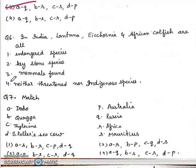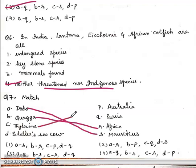Seventh is match the following: Dodo, Quagga, Thylacine and Steller's sea cow. Dodo - Mauritius, Quagga - Africa, Thylacine - Australia, Steller's sea cow - Russia. Right answer will be first.